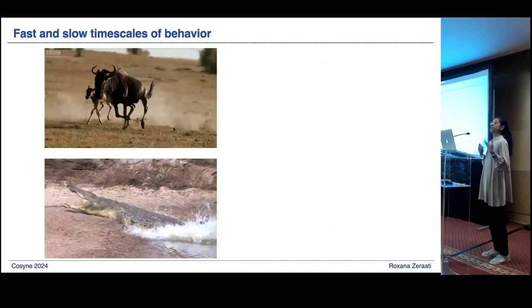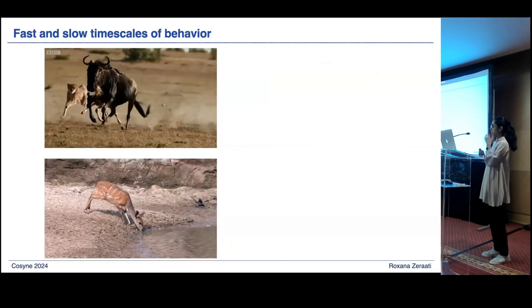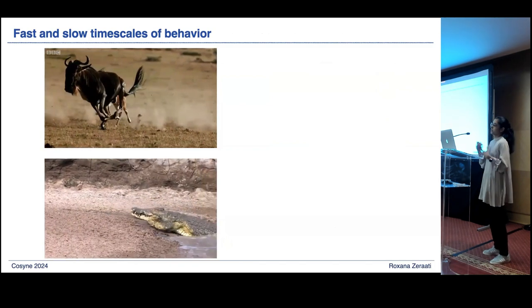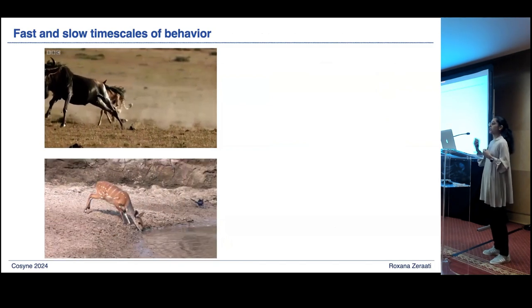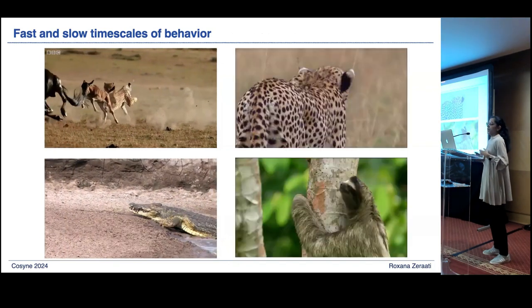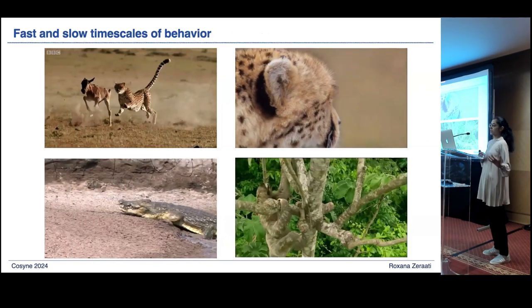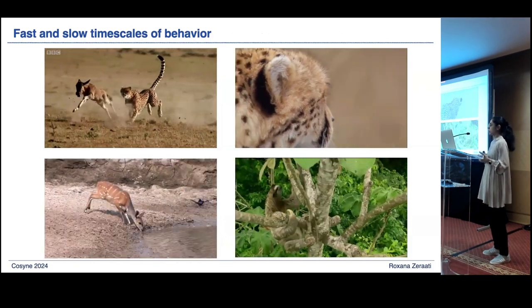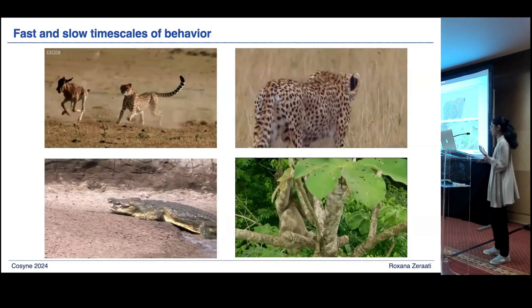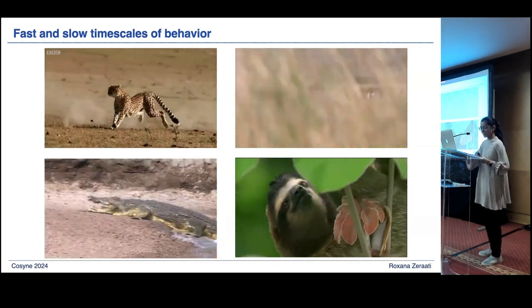Animals, in order to survive in the environment, need to perform behaviors over a broad range of timescales. For example, in the interactions between prey and predators, they usually need to have very fast movements or reactions. On the other hand, sometimes they also need to perform very slow evidence accumulations, for example when they do planning or decision-making, or sometimes because they have slow metabolic processes.